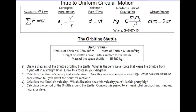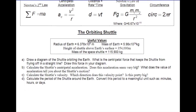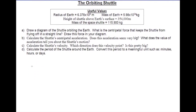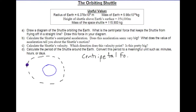Our first problem involves a satellite orbiting Europa. We have a bunch of equations and some useful information provided. The first thing we need to do is draw a diagram of the satellite orbiting the Earth, so here's my little satellite, and here is the Earth. The satellite moves in an elliptical path around the Earth.